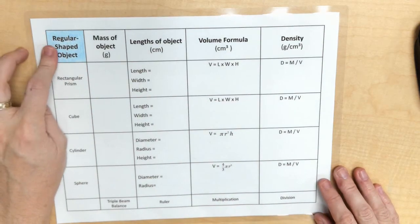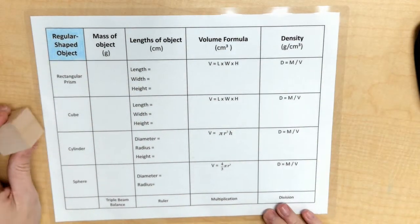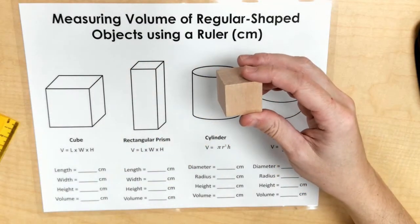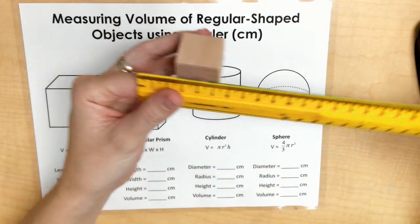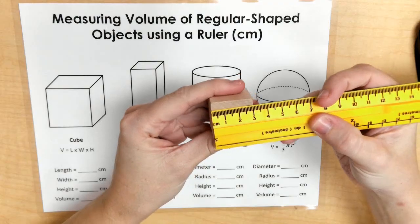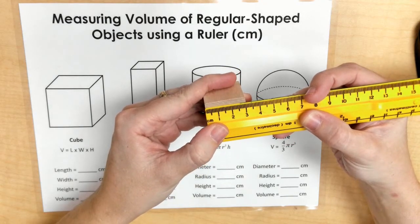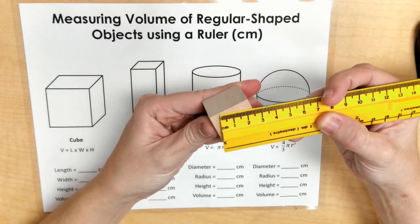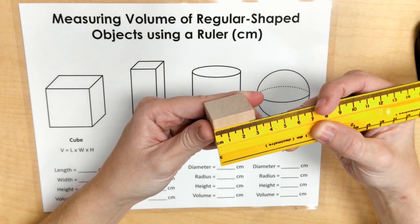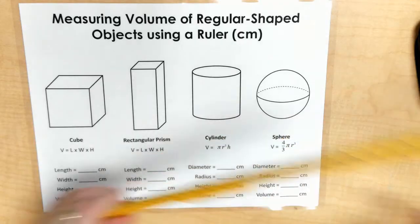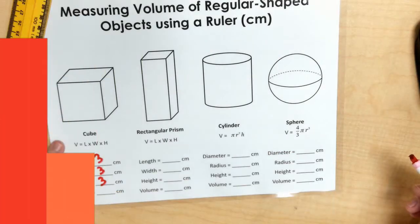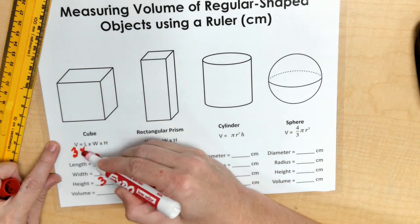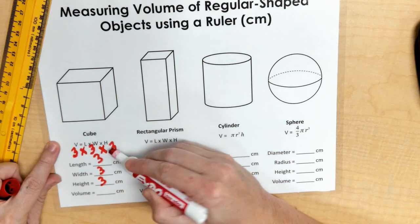And for my regular shaped objects that we're going to find the density for, I'm going to use the cube and a rectangular prism. With my cube, I'm going to grab my ruler and I'm going to measure one side. We know with the cube that all sides should be equal. So here's 3 centimeters. If I flip it over, that will be 3 centimeters. If I twist it this way, that'll be 3 centimeters. So my length, my width, and my height are all 3 centimeters. And we know with our formula, length times width times height, we should be able to go 3 times 3 times 3 or the same thing as 3 cubed.